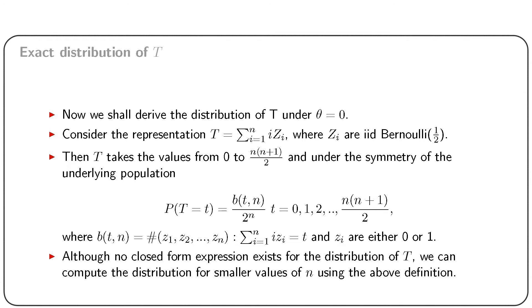Now we shall obtain the distribution of T under theta = 0. Assume theta = 0 and consider the representation T = summation i from 1 to n of i·zi, where zi are iid Bernoulli(1/2). This is possible as under theta = 0, z and z_d vector have the same distribution. If all observations are negative, T is 0, and for all positive observations, T is n(n+1)/2. For positive and negative mixed observations, T lies between 0 and n(n+1)/2.